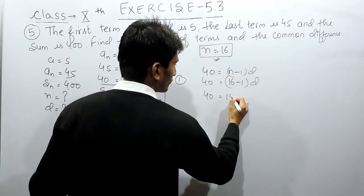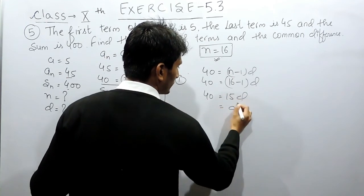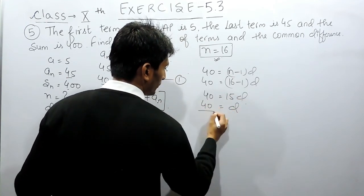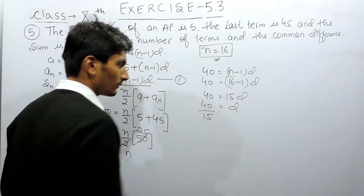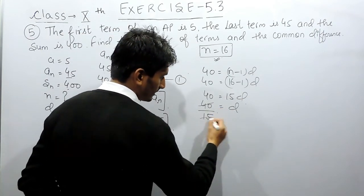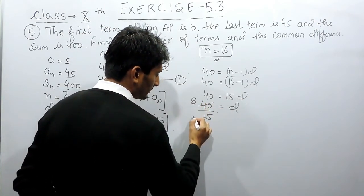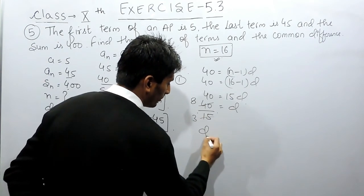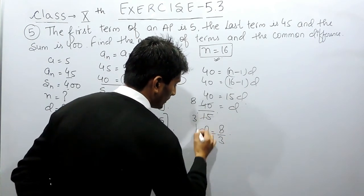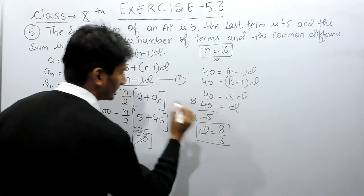This is equals to d. So this will be equals to 15d. Now the value of d will be equals to 40 upon 15. So if I cancel this, 5 8 times, 5 3 times. The common difference should be equals to 8 by 3. So this should be the answer here.